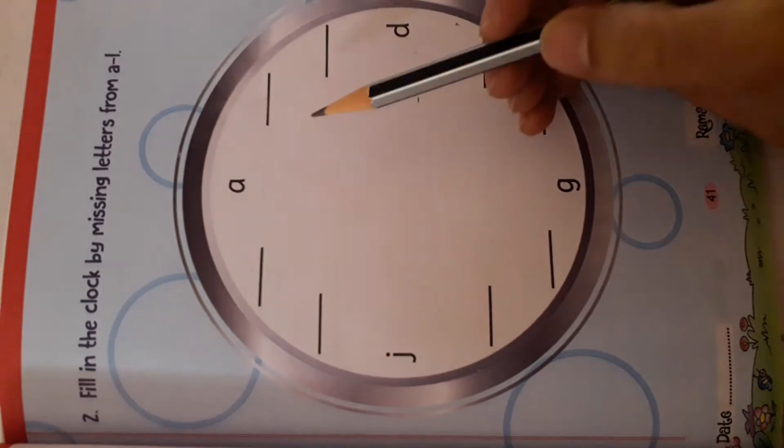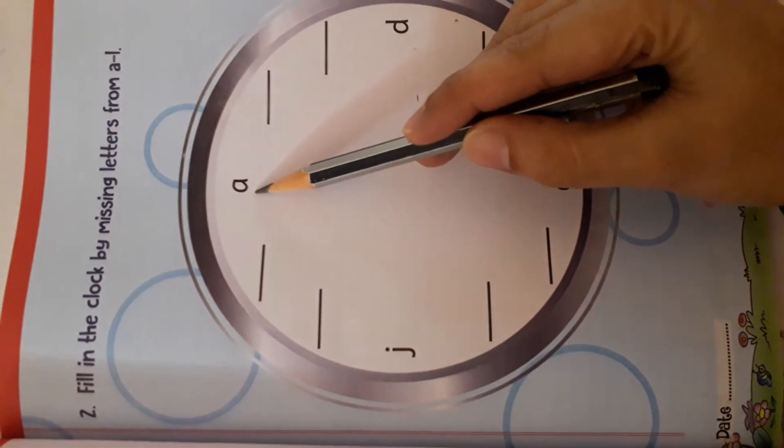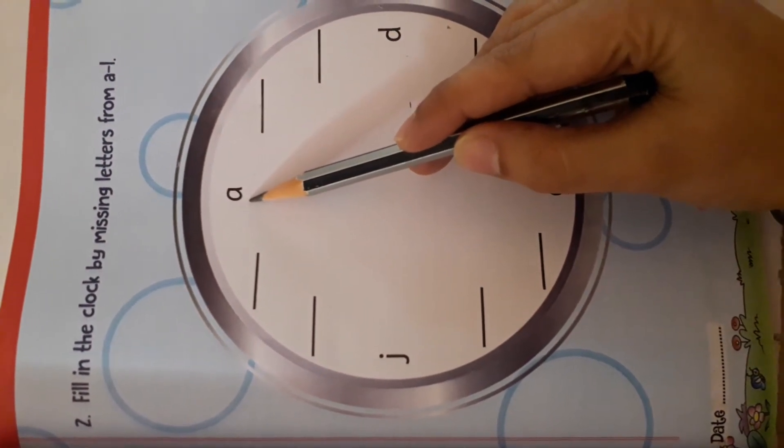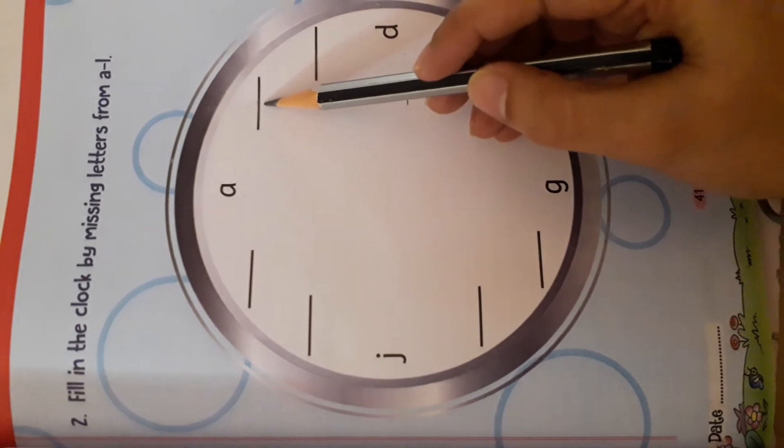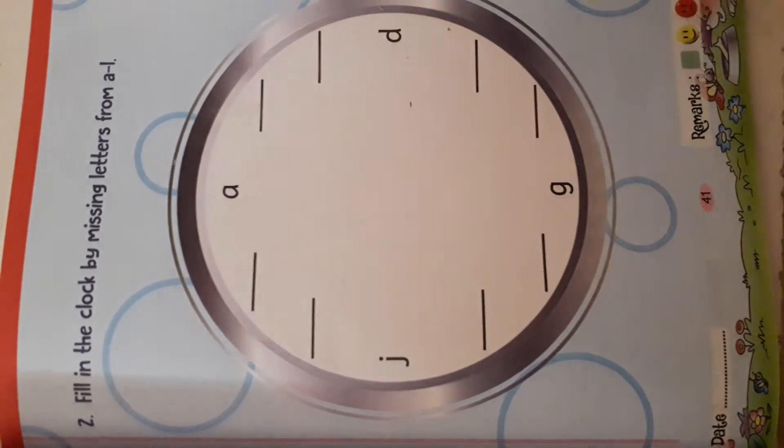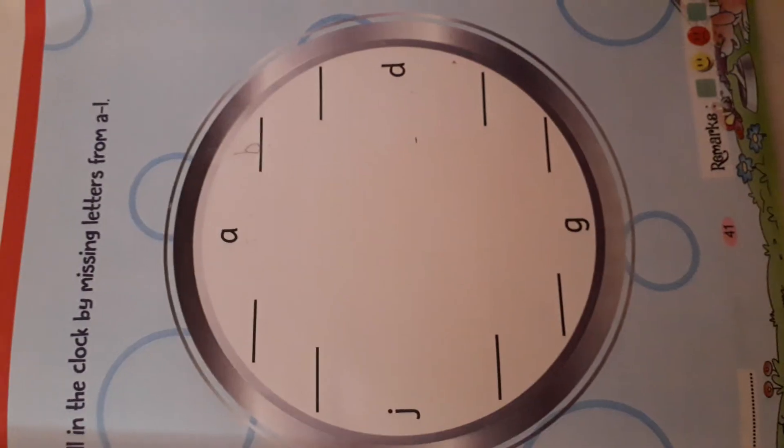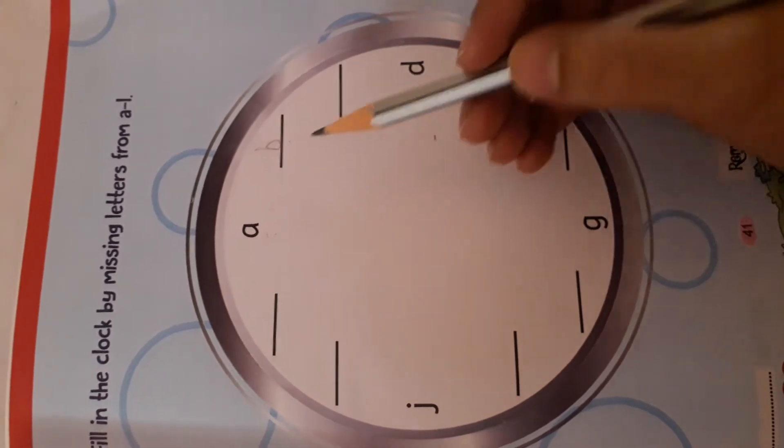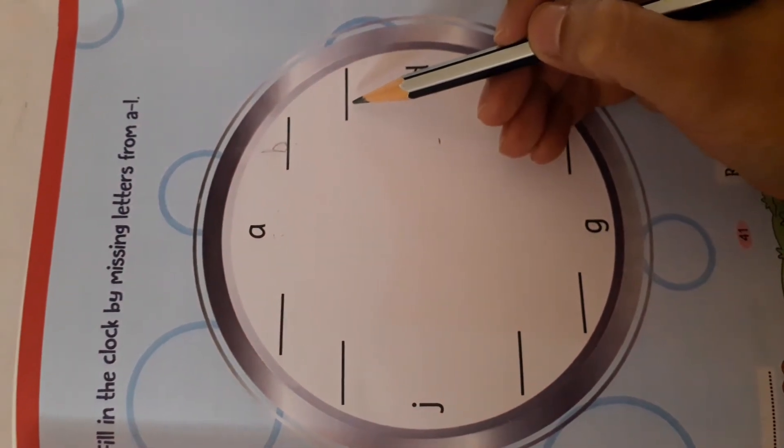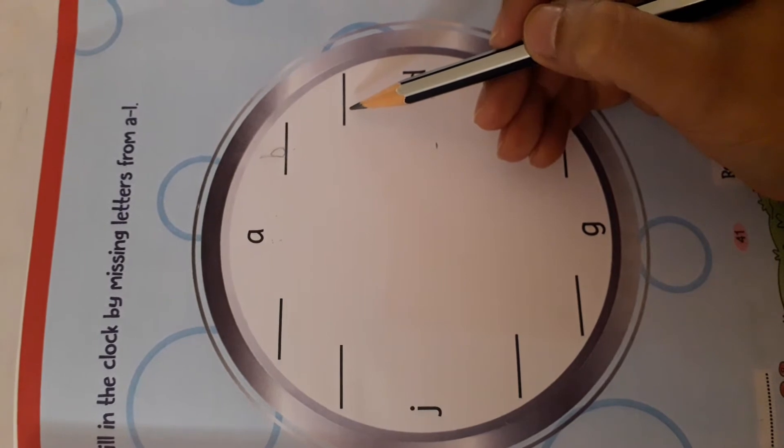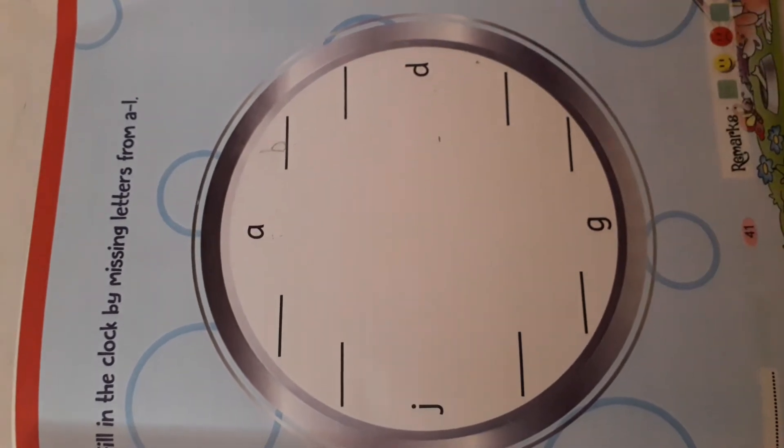So, let's start. What is this? A. A for? Apple. Then what next? B. Very good. Then after B, what will come? C. Very good. C for? Cat. Cat.